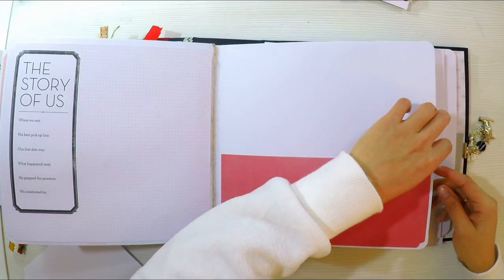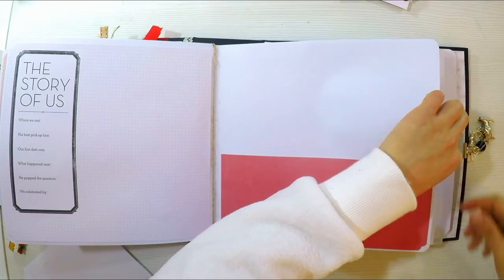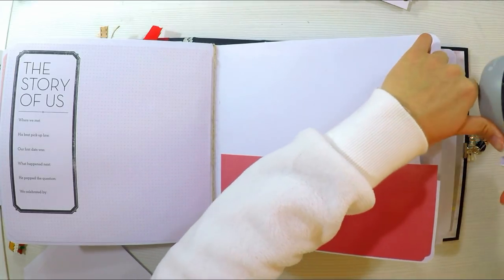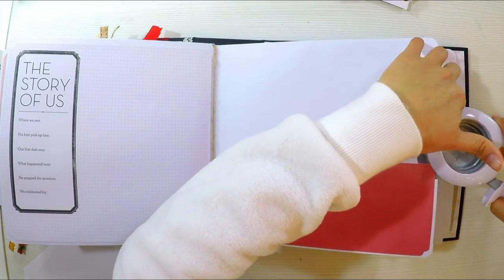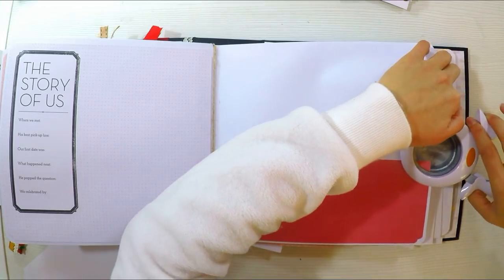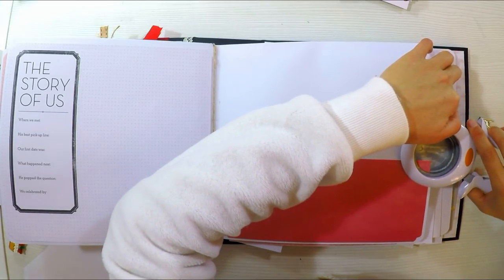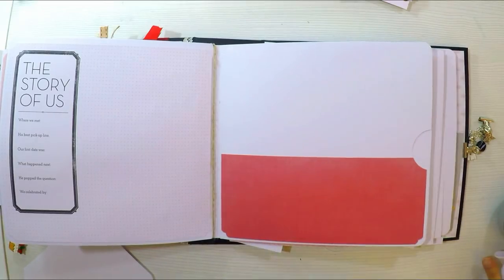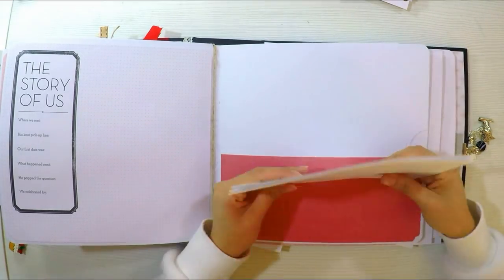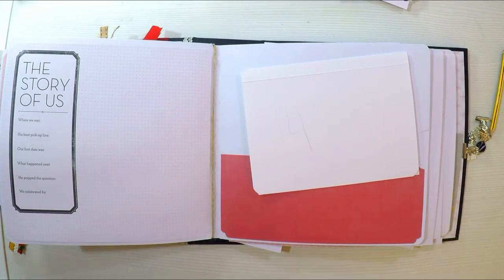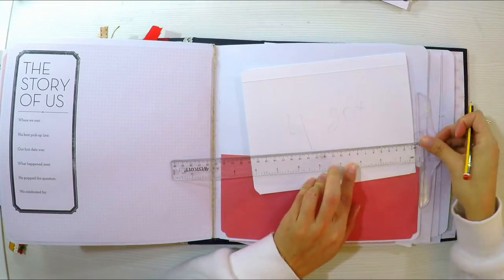Simplemente lo que he hecho es agregar un trocito de la cartulina que ya venía escrita con este mensajito de Story of Us. Y en la página siguiente voy a agregar una especie de ventanas pero haciendo como una estructura cuadriculada, ya van a ver, es muy sencillo. Y lo que haremos es tapar la solapita para que no se vea como hemos hecho esta estructura.